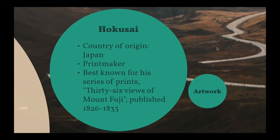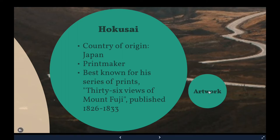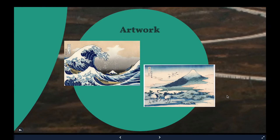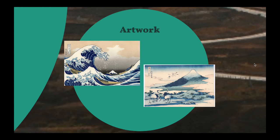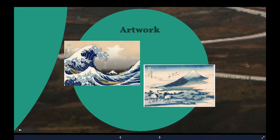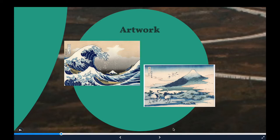Hokusai was an artist from Japan. He was a printmaker, and he is best known for his series of prints, 36 Views of Mt. Fuji. Let's take a look at some of his artwork. This artwork on the left is called The Great Wave, and it is one of his series of Mt. Fuji prints. The one on the right is another one of his Mt. Fuji prints, but at a different angle.